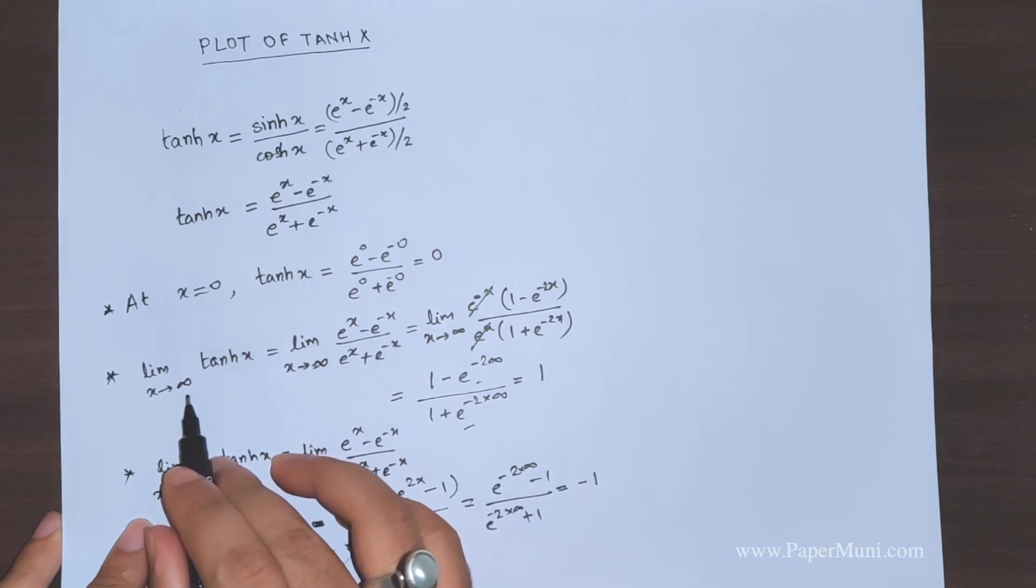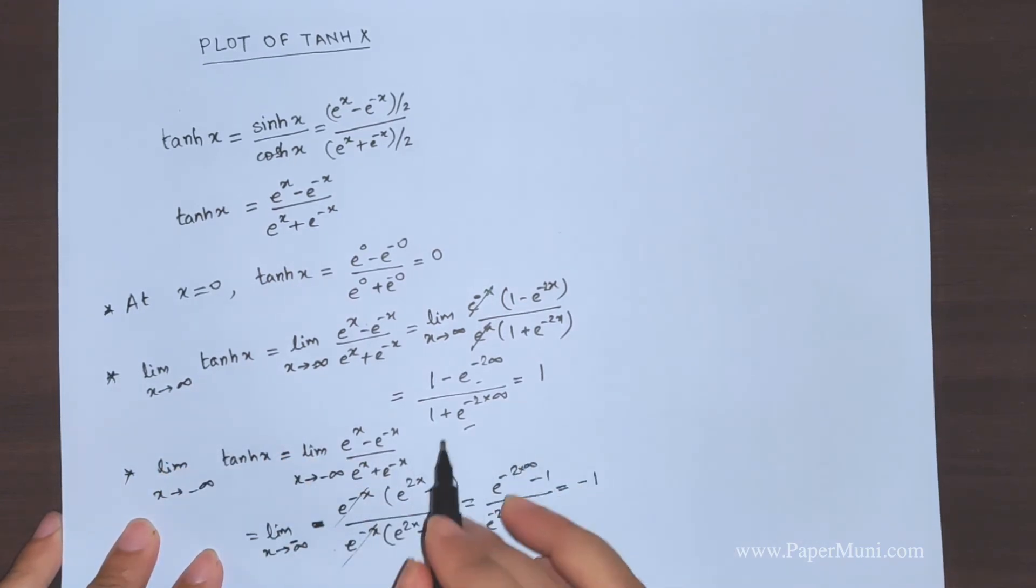So we have three points. As we keep increasing x to very large values, it approaches 1. As we go towards negative infinity, it approaches -1.